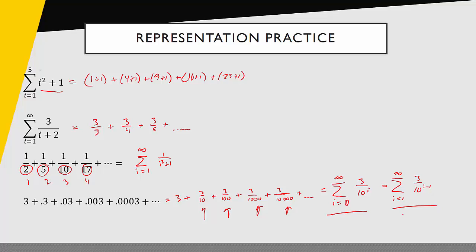So now we've learned how to represent our series in expanded form and using sigma notation. But the bottom line is a series is a big sum of numbers, and for an infinite series we're adding up infinitely many numbers. One question right away is: can we actually do that? If we can add up infinitely many numbers and get a finite answer, we say our series converges. The convergence of series is the main focus of the next video. So that concludes this video — thanks for your time.